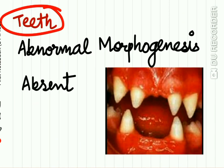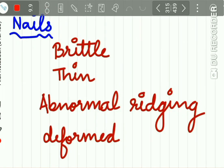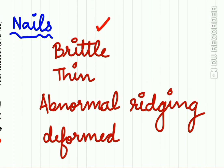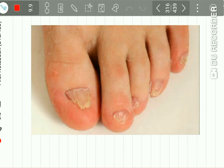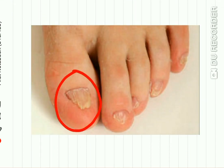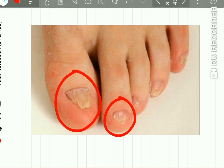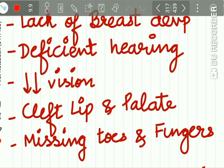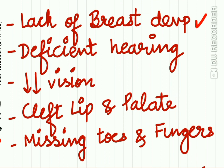Dental features: teeth show abnormal morphogenesis — you can see abnormally shaped teeth, and sometimes teeth may even be absent. The nails are brittle, thin, show abnormal ridging, and may be deformed, as seen in the characteristic nail features of ectodermal dysplasia. Other features include lack of breast development, deficient hearing, reduced vision, cleft lip and palate, and missing toes and fingers.